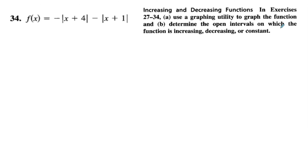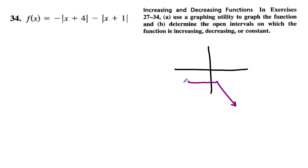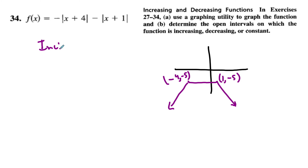This next problem says to use a graphing utility and graph the function. This is what it looks like, and I'm going to indicate some key points. The point negative 4, negative 5 and the point 1, negative 5 are key. We're asked to find the open intervals on which the function is increasing, decreasing, or constant.